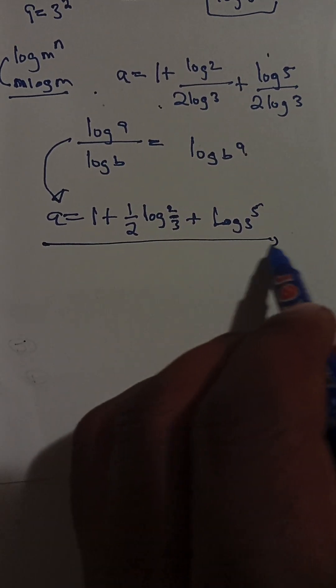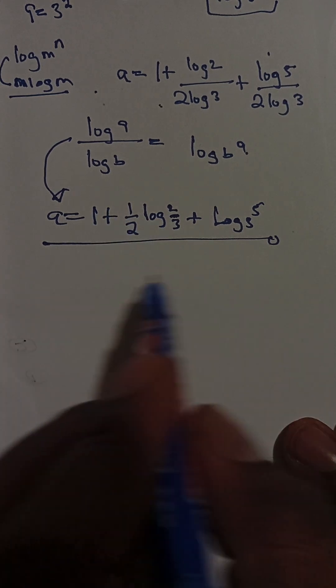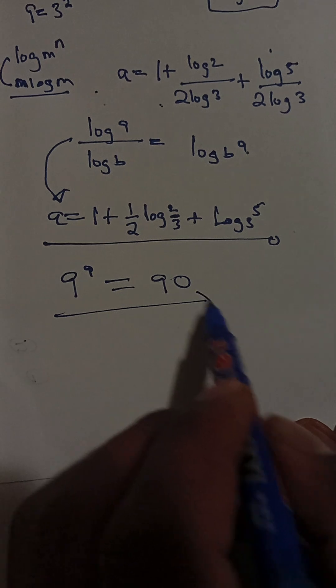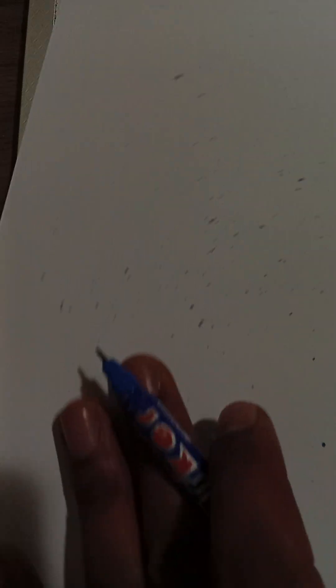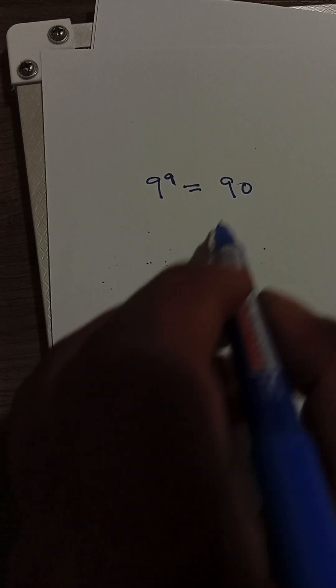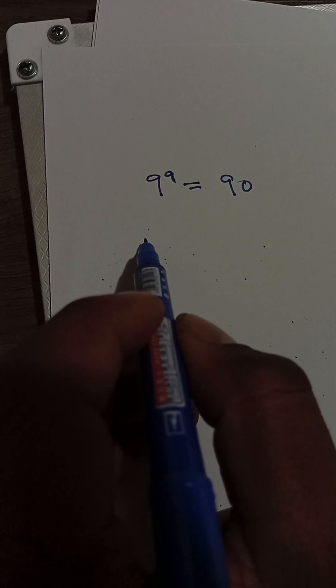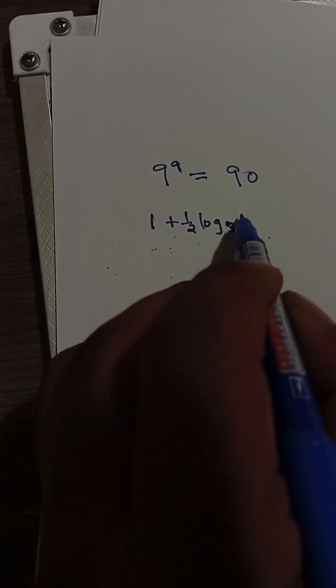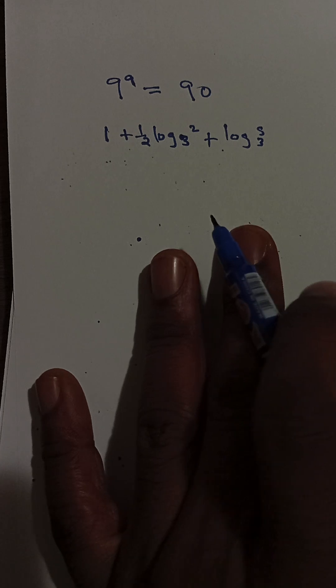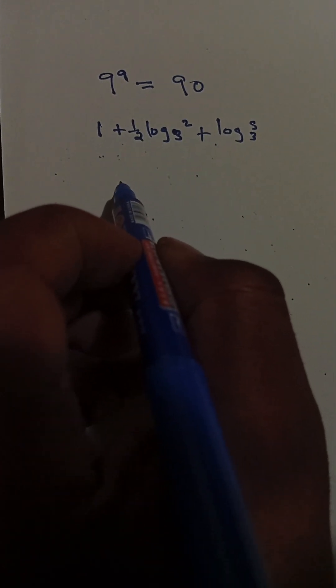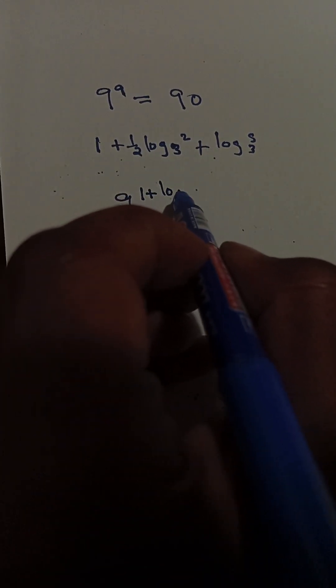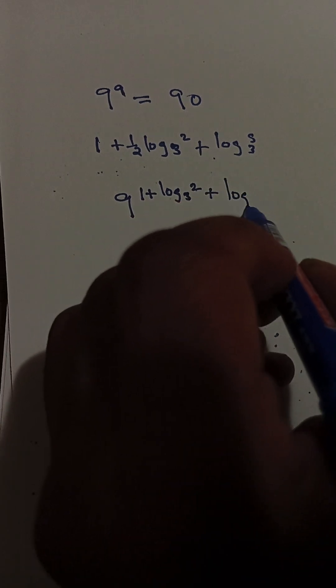Now let's verify. We'll substitute a = 1 + (1/2)·log₃(2) + (1/2)·log₃(5) back into 9^a = 90. So we evaluate 9^[1 + (1/2)·log₃(2) + (1/2)·log₃(5)].